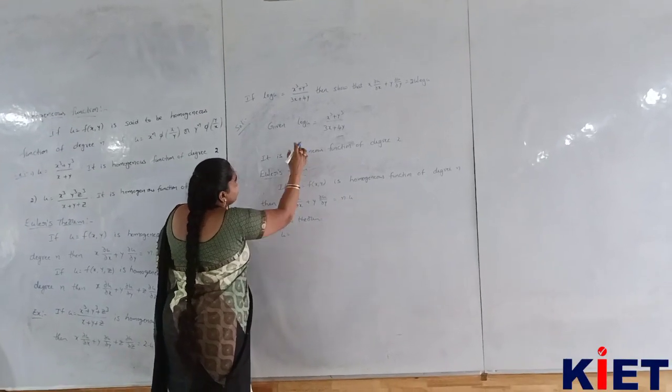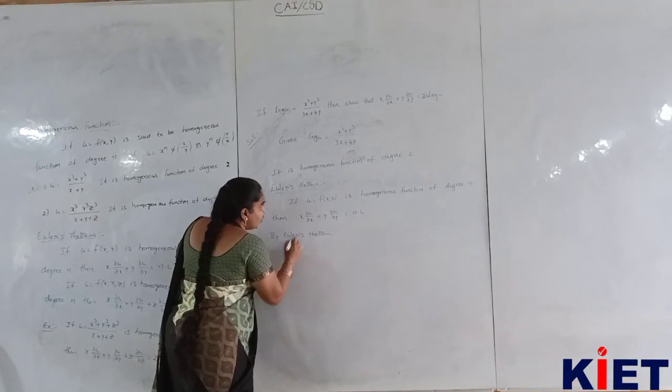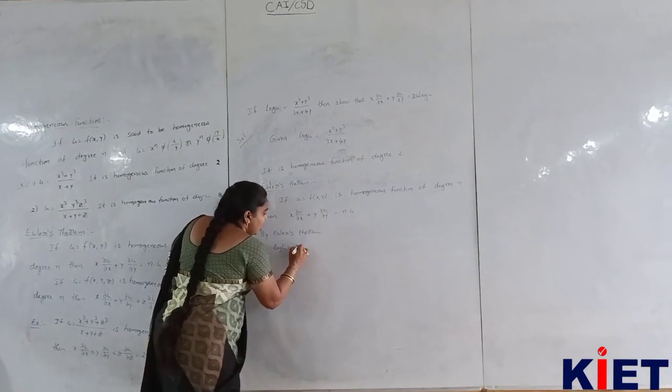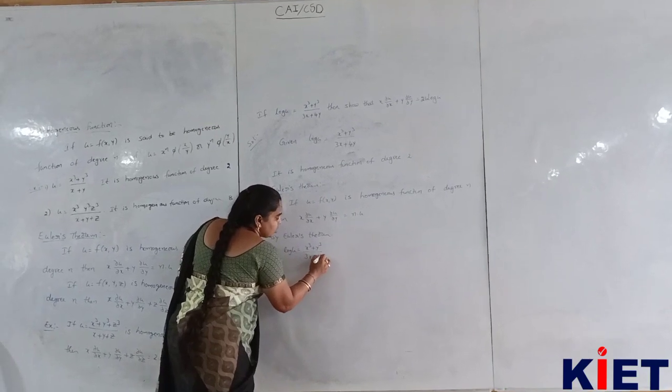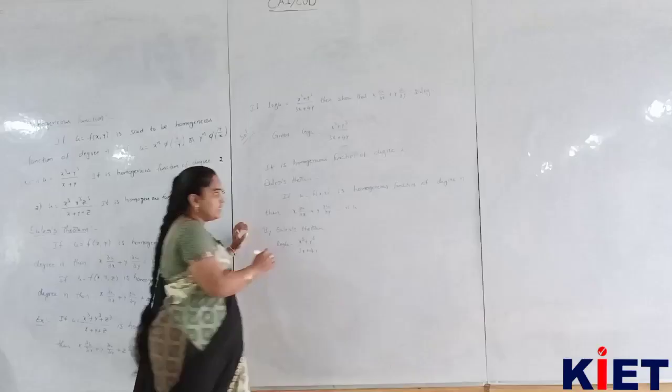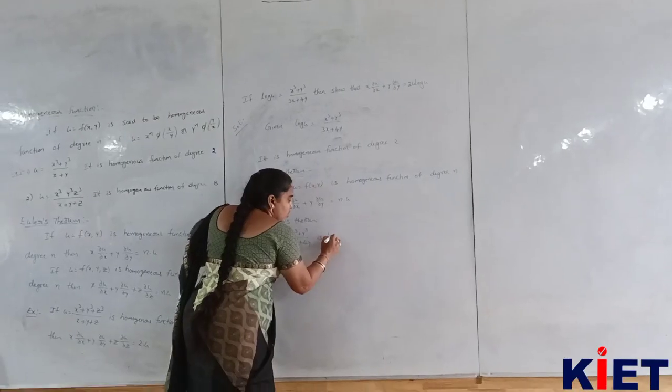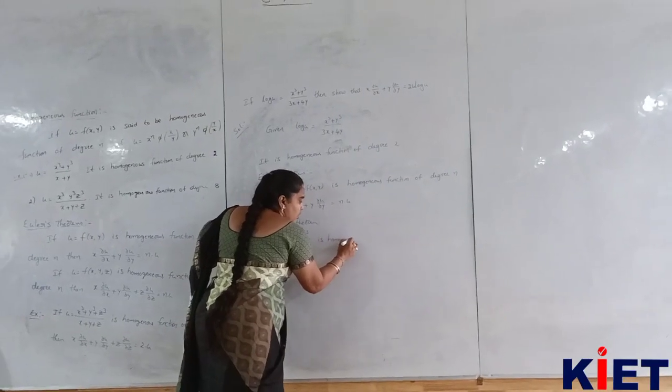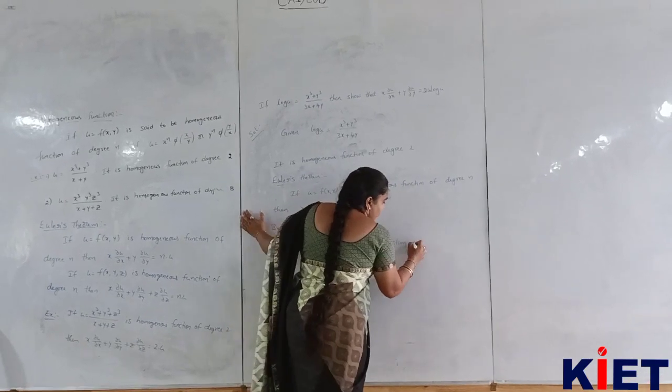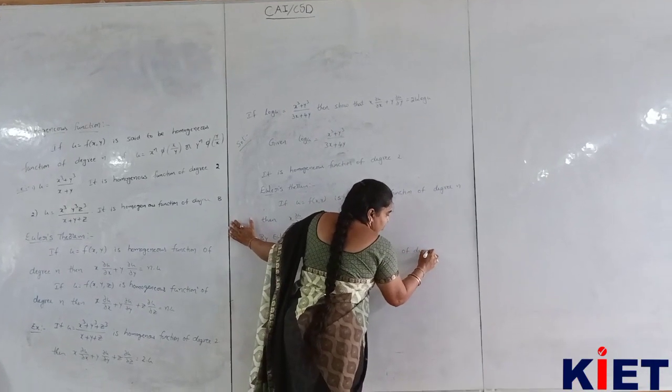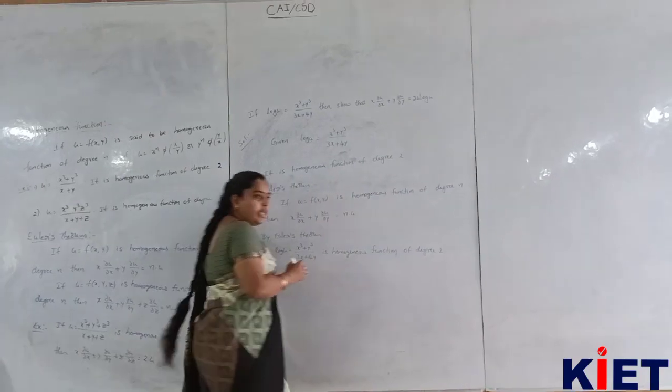u is log u. u place le on the log u is x cube plus y cube by 3x plus. Log u is homogeneous function of degree 2.